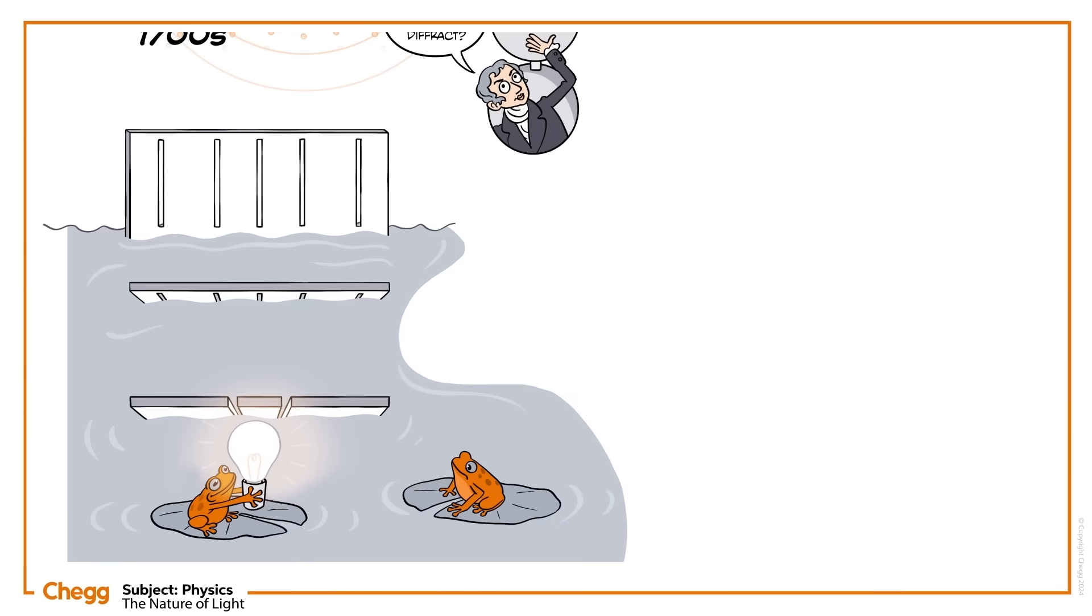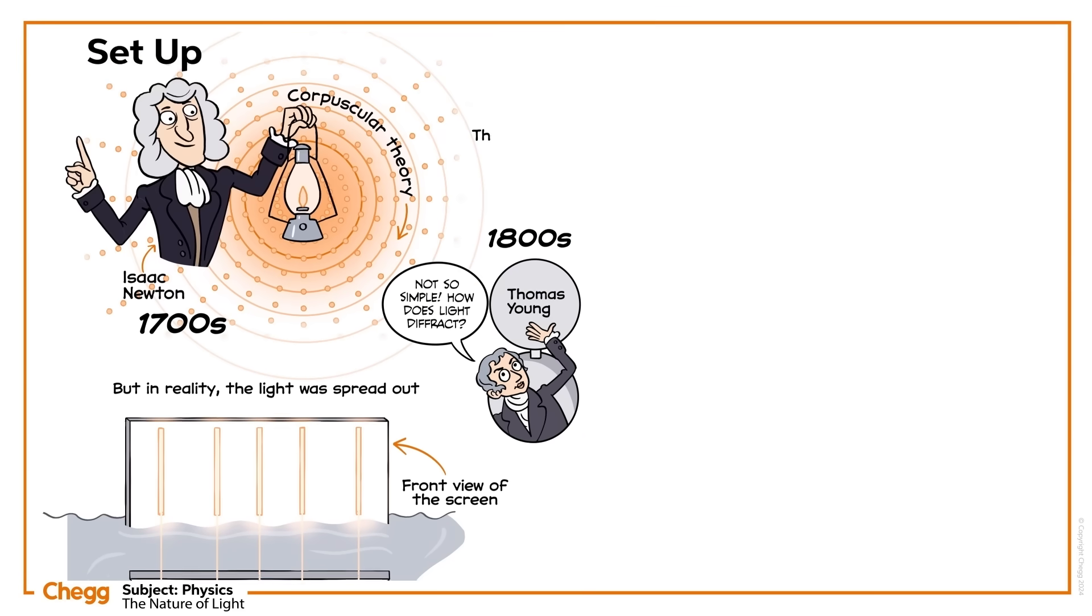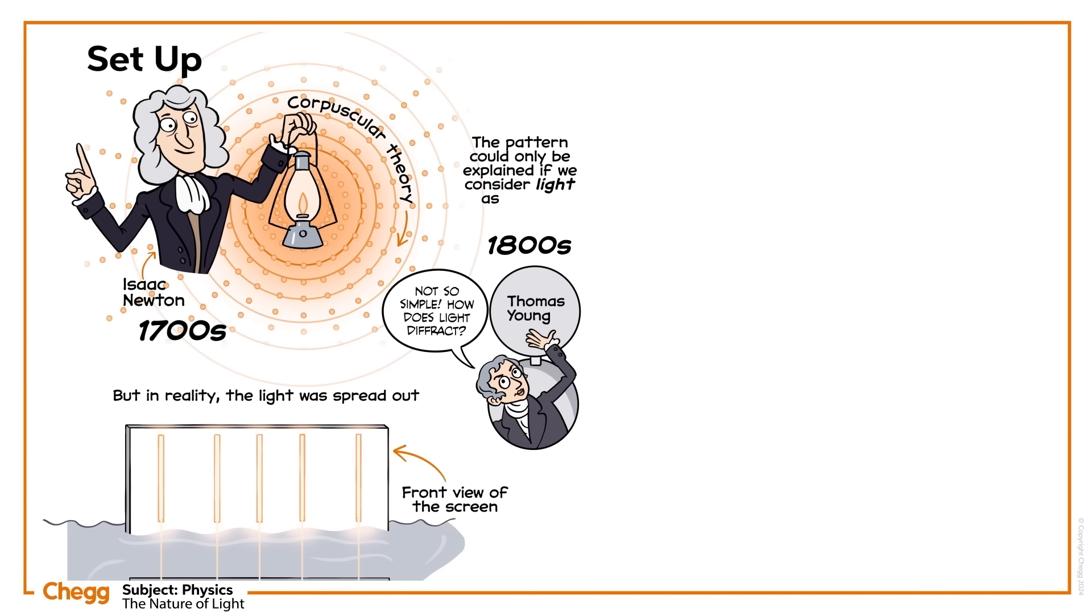Light was shined towards two slits in a screen. When the light was split into two separate beams and then recombined, it gave a peculiar interference pattern. If light were indeed a particle, you would expect the interference pattern to mirror the slits in shape and size. But in reality, the light was spread out. The light from the two sources overlapped and interfered with one another, creating some bright fringes and some dark fringes, behaving in a similar way to ripples or waves on a pond of water. This is something particles cannot do. The pattern could only be explained if we consider light as a wave.